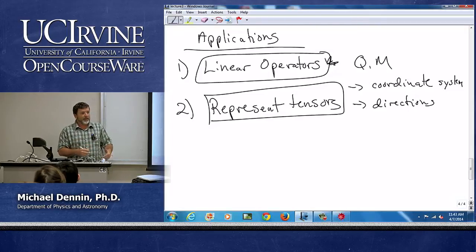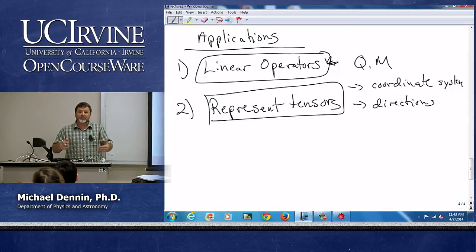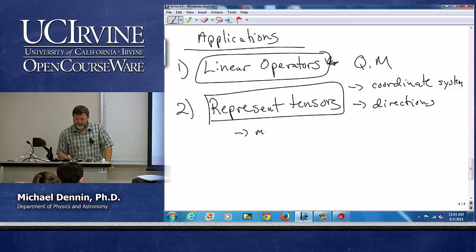Right, that's going to relate torque and alpha, which are vectors. And it's going to mix directions. So you need to know more than one direction in that case. You need to know two directions.